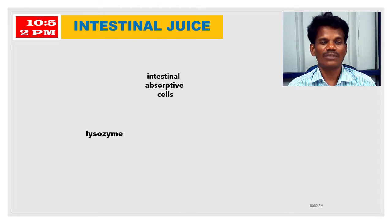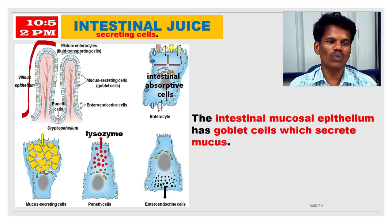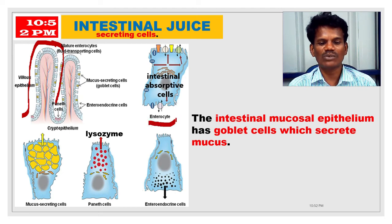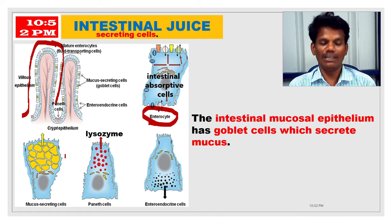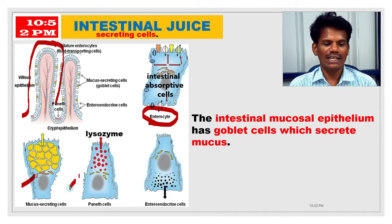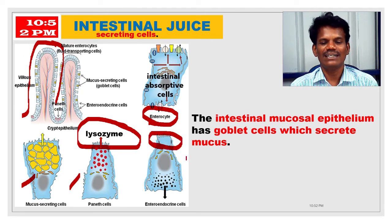The mucosa of the intestine consists of many finger-like projections called villi. These villi contain various types of cells. Enterocytes are responsible for intestinal absorption, absorbing glucose and electrolytes. Mucus-secreting cells are present in the crypts. Paneth cells secrete lysozyme, which is responsible for killing pathogens. Enteroendocrine cells are the hormone-secreting cells.